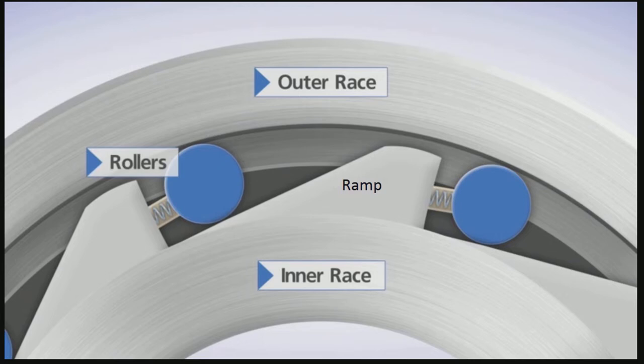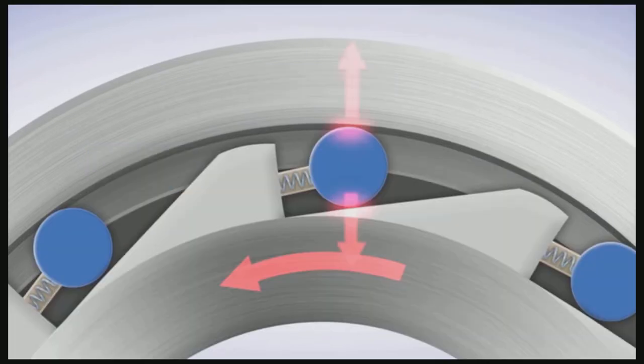This picture shows you complete detail of the outer race, roller, and the ramps. This is the anticlockwise direction, and when the drive shaft moves in anticlockwise direction, the rollers come into contact with the ramp and the outer race.